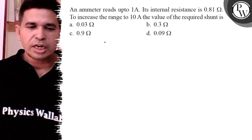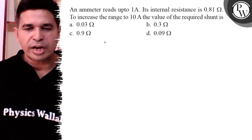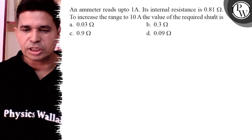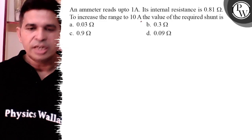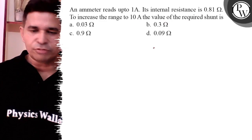Hello Bachchow, let us see this question. An ammeter reads up to 1 ampere. Its internal resistance is 0.81 ohm to increase range to 10 ampere. Then what is the value of shunt resistance?